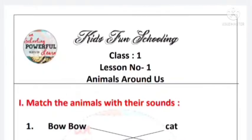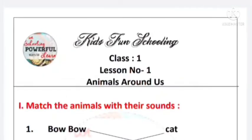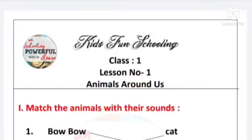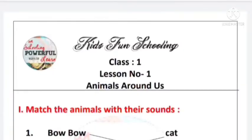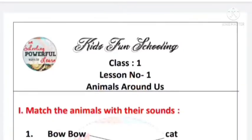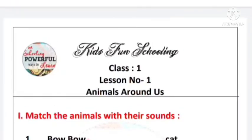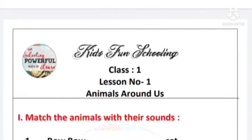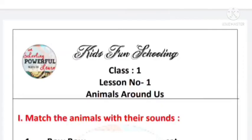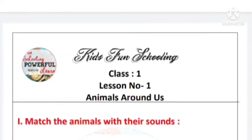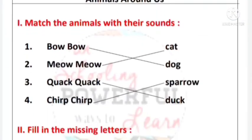First main: match the animals with their sounds. Number 1 - bau bau: dog. Meow meow: cat. Quack quack: duck. Chirp chirp: sparrow.